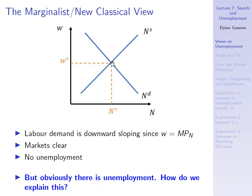Labor demand is downward sloping because the wage equals the marginal product of labor, and as the amount of labor employed by firms increases, the marginal product falls. So as the wage falls, there will be higher demand for labor, up until equilibrium is restored and there's no longer unemployment.